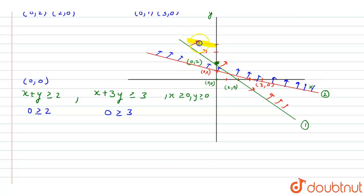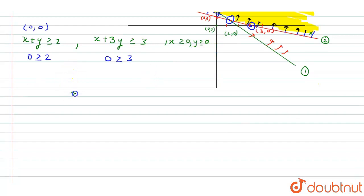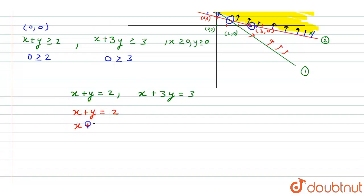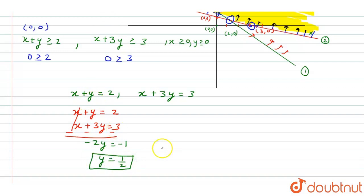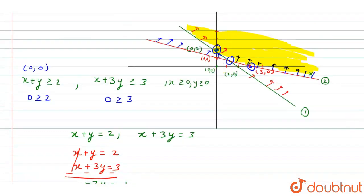We identify the three corner points of the feasible region. The first corner point is (0, 2), the second is the intersection of the two lines, and the third is (3, 0). To find the intersection, we subtract equation 1 from equation 2: x plus y equals 2 minus x plus 3y equals 3 gives minus 2y equals minus 1, so y equals 1/2. Substituting back gives x equals 3/2. So the intersection point is (3/2, 1/2).